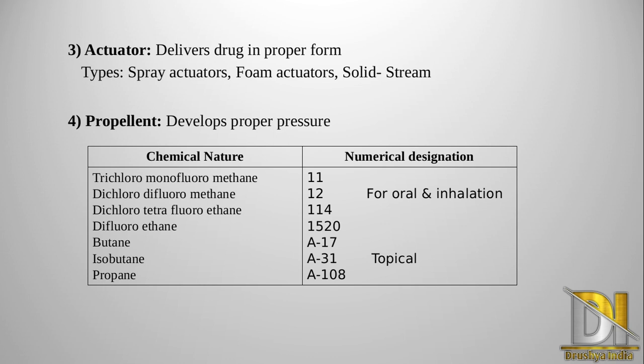The next propellant is difluoroethane, with designation 152a. Then butane, with designation A17. Next is isobutane, with designation A31. And last is propane, with designation A108. These last three are used in topical aerosols, while the first three are used in oral or inhalation aerosols.